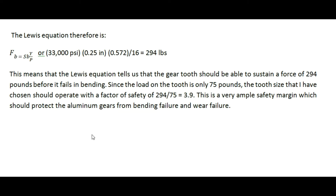Let me correct that — it doesn't mean that the force on the tooth will be 294 pounds. It means that the tooth should be able to endure as much as 294 pounds before it fails in bending. Since we know from our previous calculation that the load on the tooth is only 75 pounds, the tooth size I've chosen should operate with a factor of safety of approximately 3.9. This is a very ample safety margin, which should adequately protect these gears from failure.